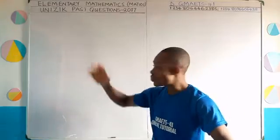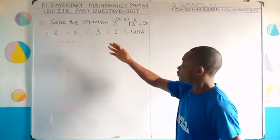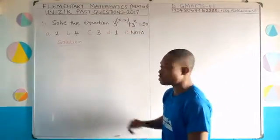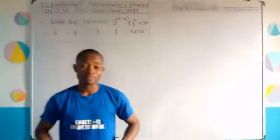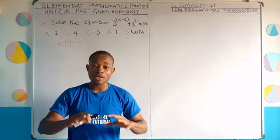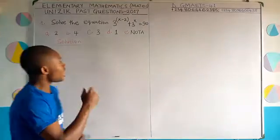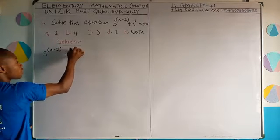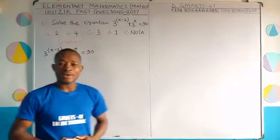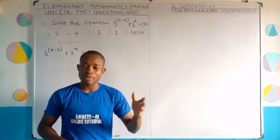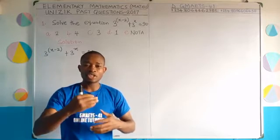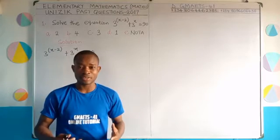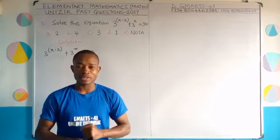Our very first question: solve the equation 3 raised to the power (x minus 2) plus 3 raised to the power x equals 90. Calculator is not allowed in this examination. This question is taken from a topic known as indicial equations — equations in indices — and we need knowledge of indices to solve this problem.